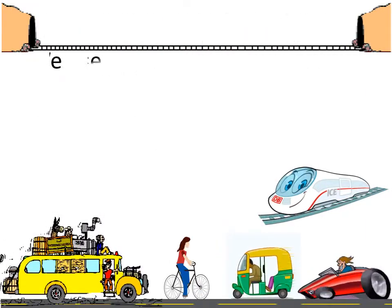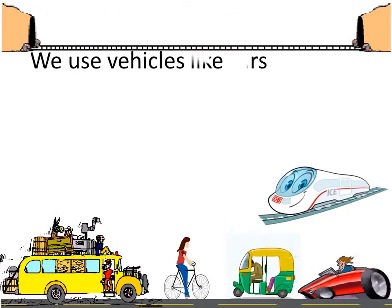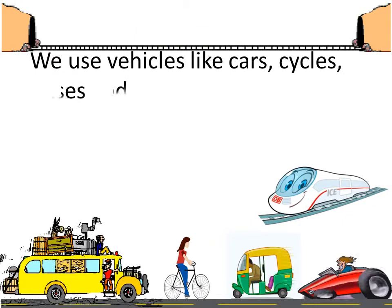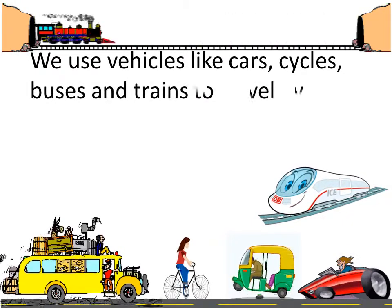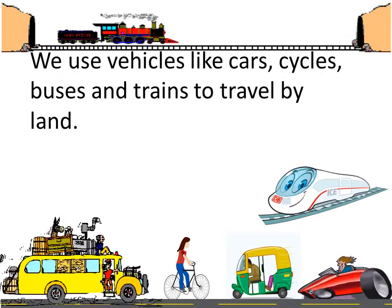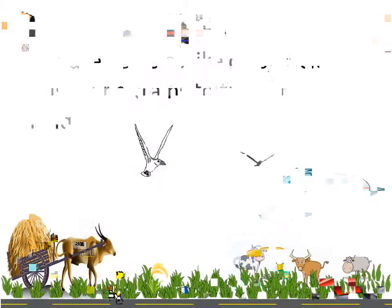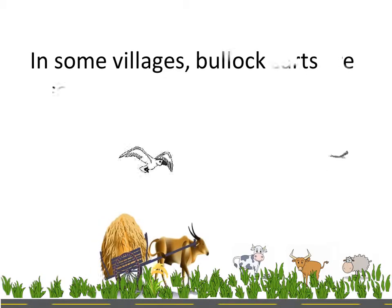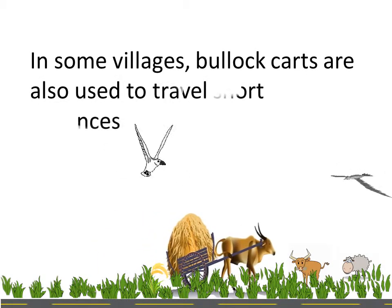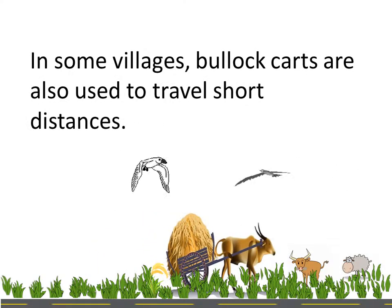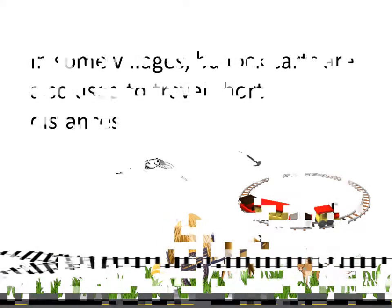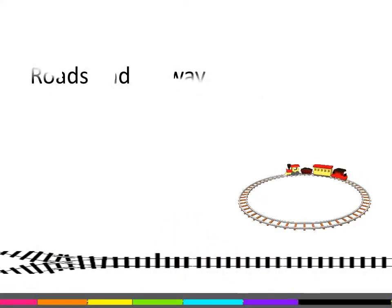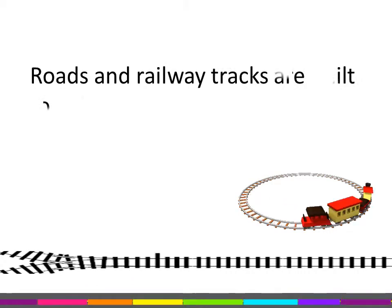We use vehicles like cars, cycles, buses and trains to travel by land. In some villages, bullock carts are also used to travel short distances. Roads and railway tracks are built to help us travel on land.